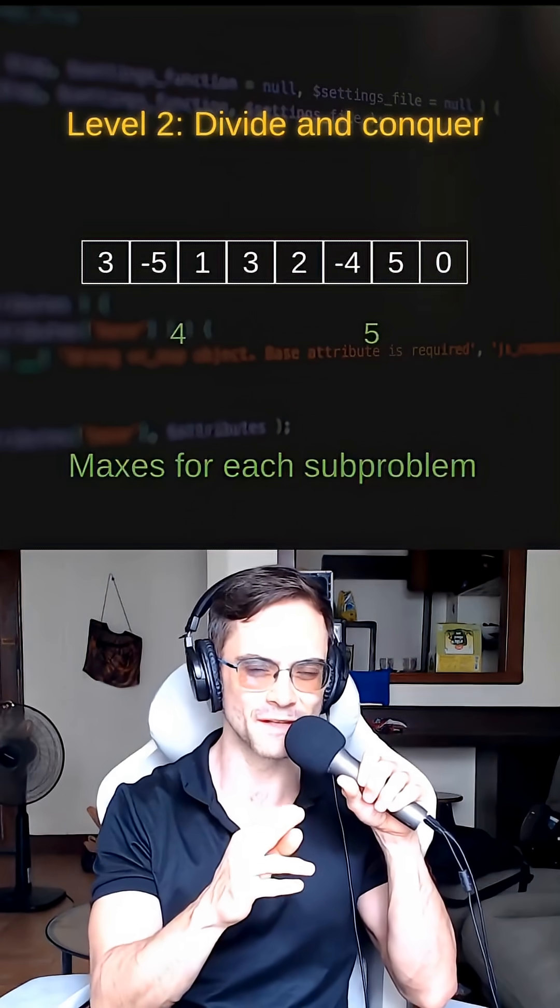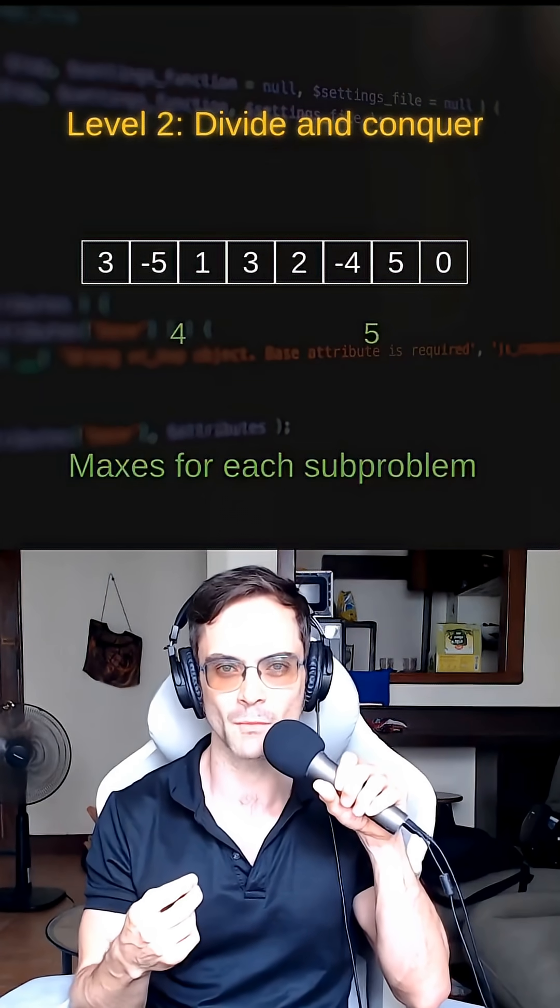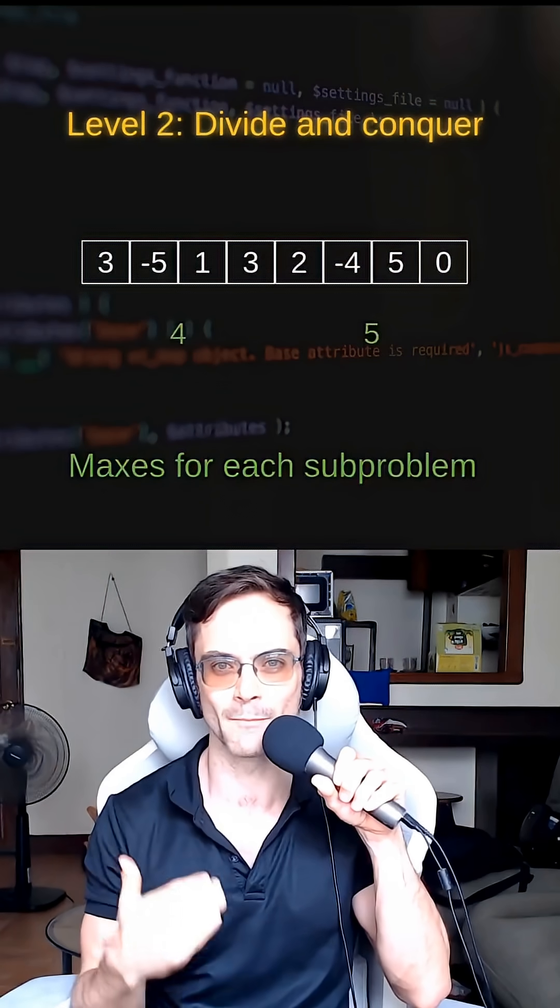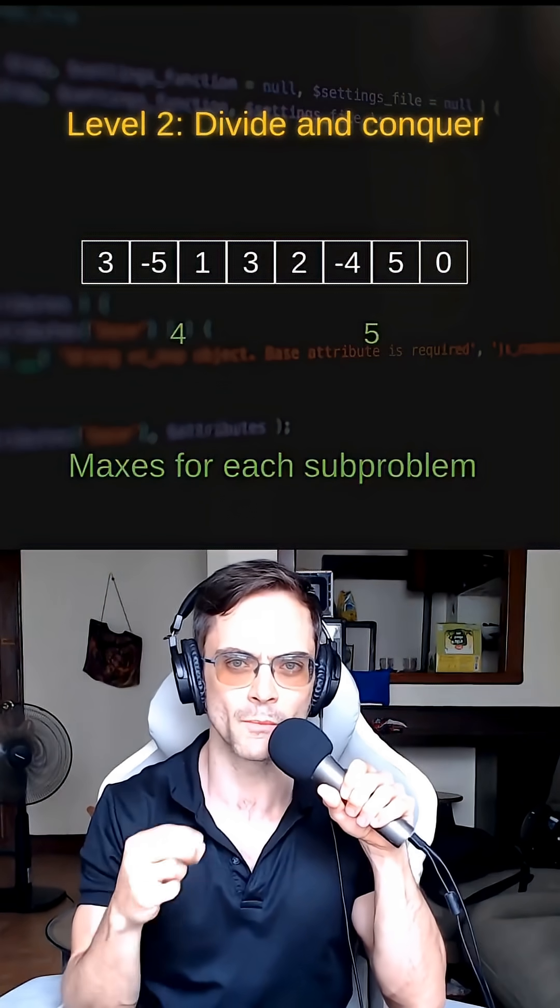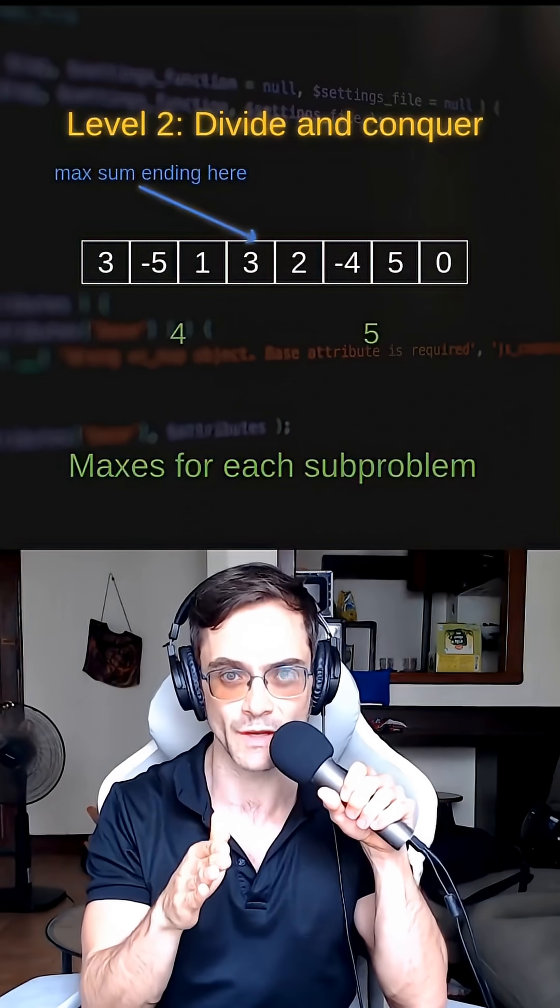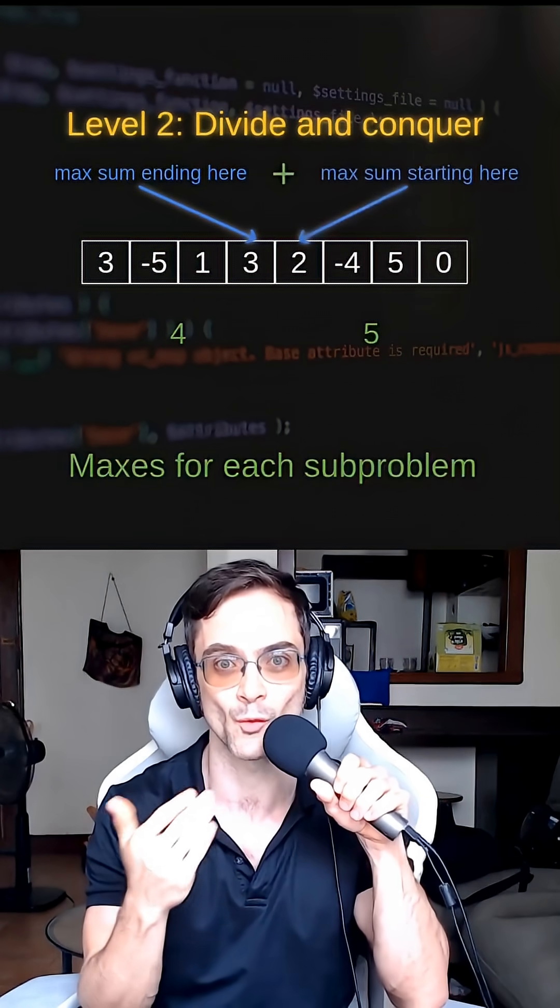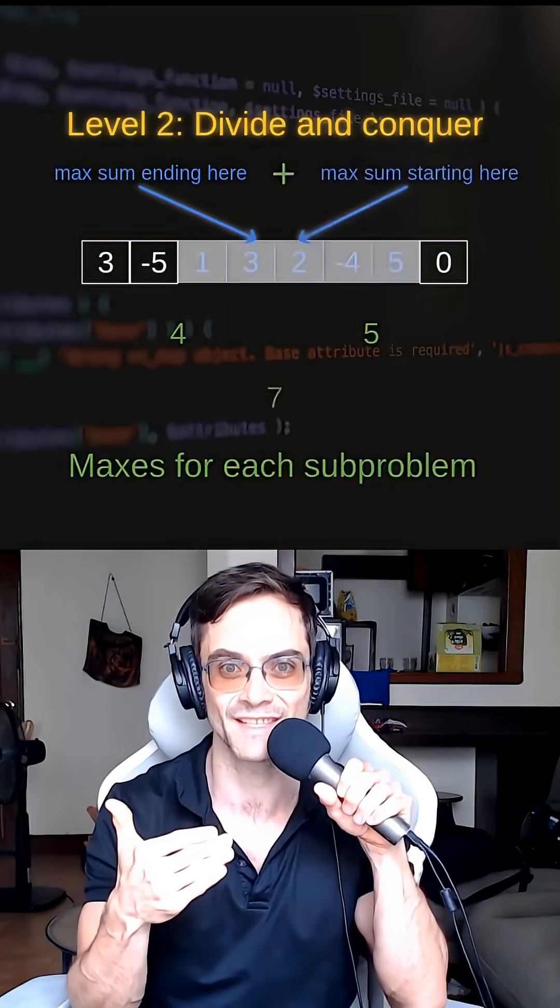Let's combine one last time to finish this up. We have to calculate the maximum sum that straddles the boundary between the left and the right subproblems. Here we'd get that by computing the sum that ends with this 3 in the middle here, and adding the sum that begins with this 2 on the right side of the boundary. We'd get 7.